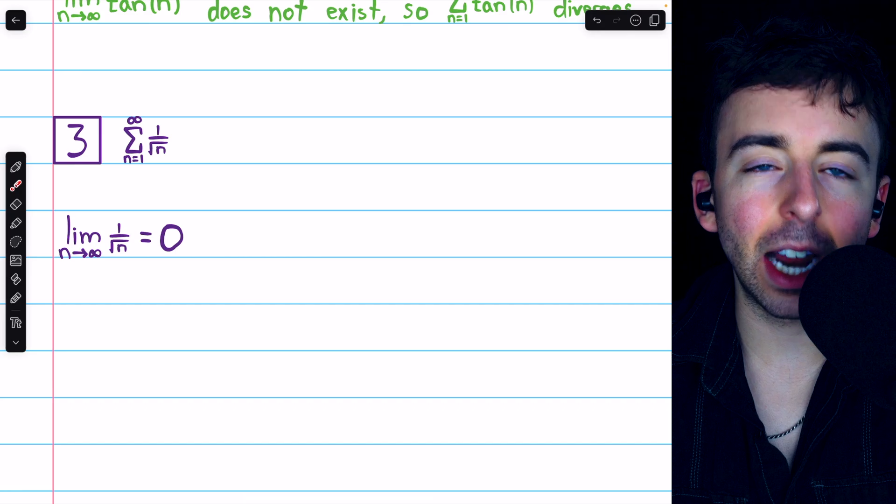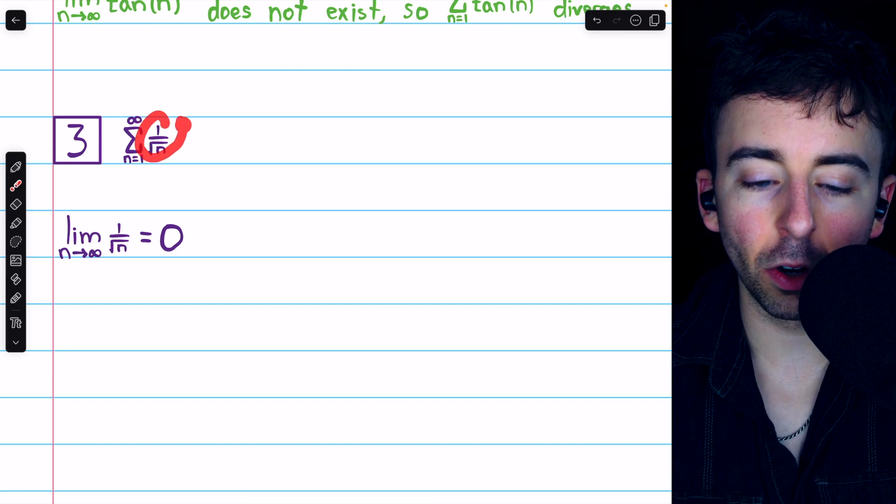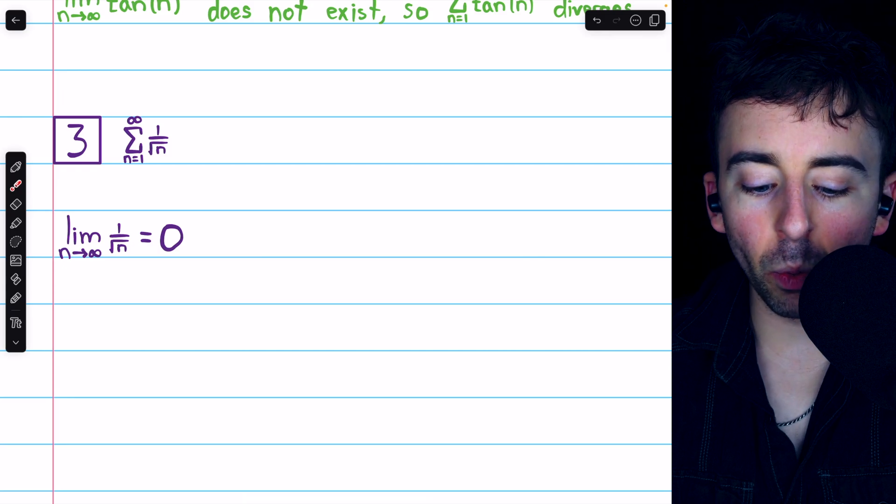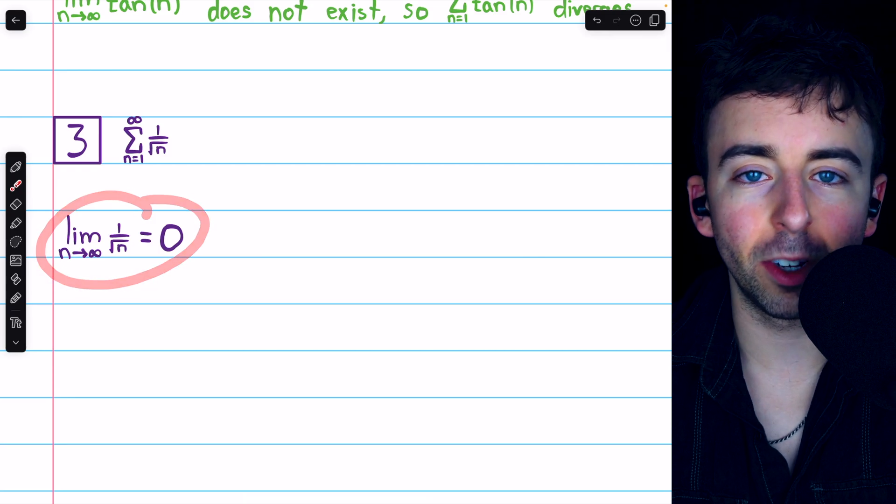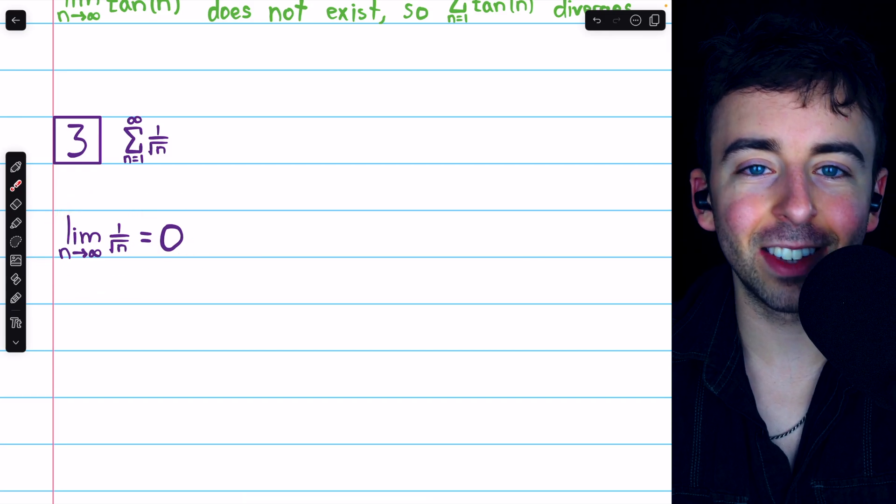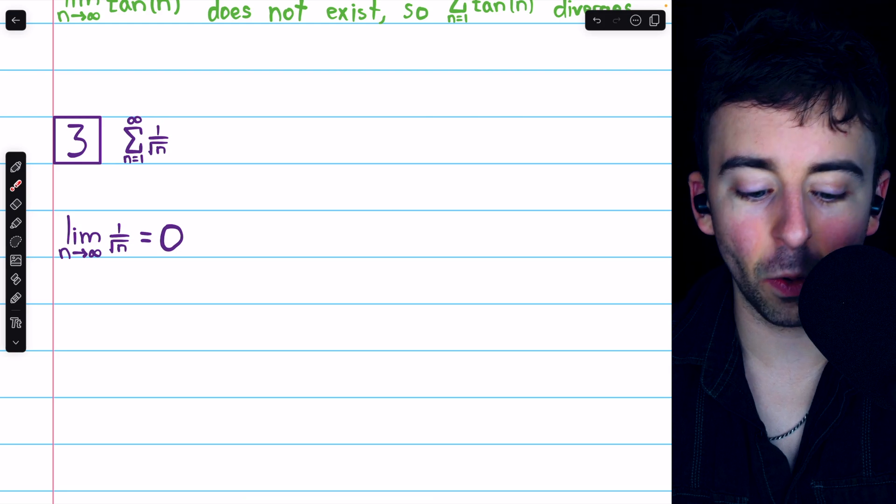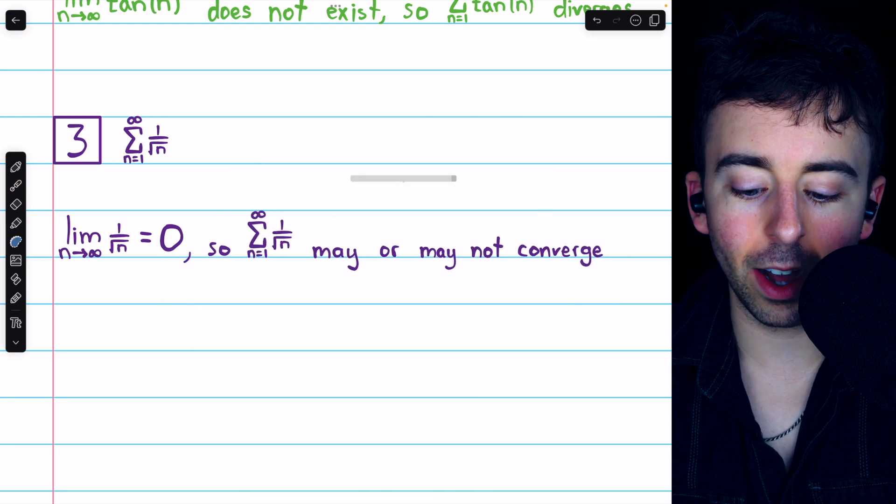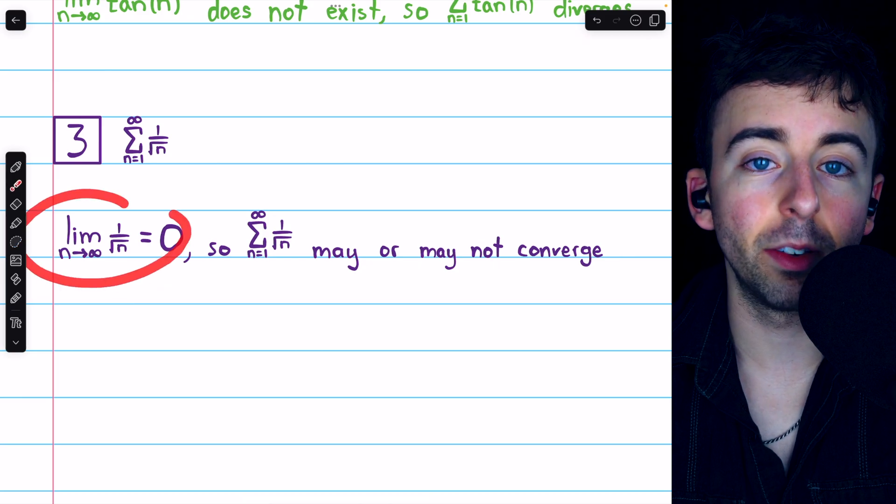So what does that tell us? The divergence test says that if the terms don't approach zero, the series diverges. But what if the terms do approach zero? Well, the divergence test tells us nothing in this case, so we don't know anything. The series may or may not converge just from this information.